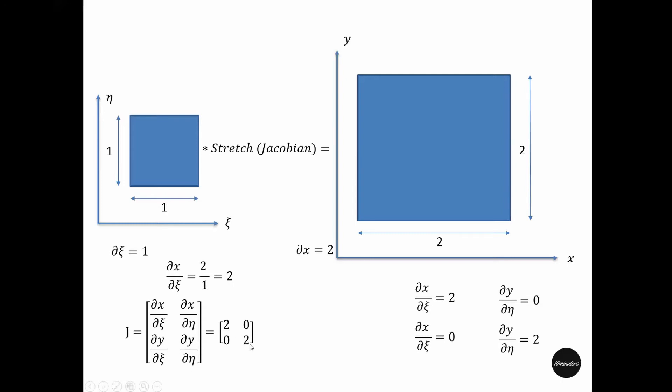Now let's see this component: del y by del zeta. When zeta changes, for example zeta goes from here to here, then x goes from here to here, but in this line the value of y does not change. So for del zeta, del y is zero, so zero by del zeta is zero. Similarly, it's zero for del x by del eta.